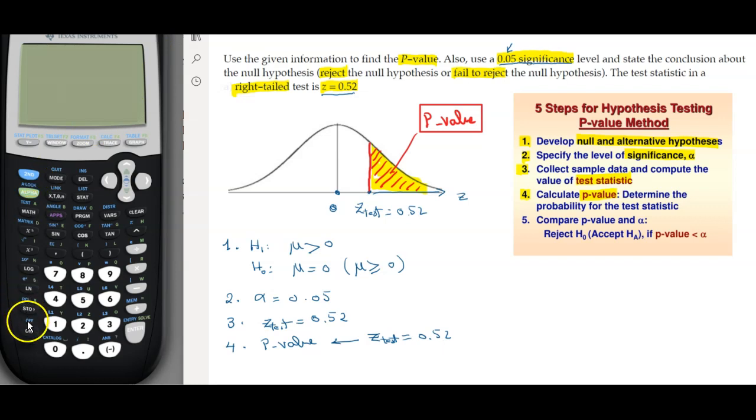So how do you find it is you're going to go to distribution menu, second VARS, and then you're going to go to normal CDF. The values are already plugged in, so here you can see it asks you for the lower, the upper, the mean, and sigma.